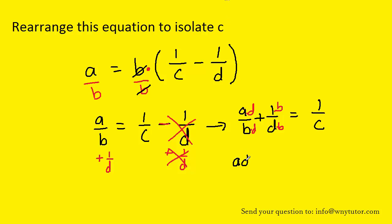We would have AD over BD plus B over BD. So we've established the common denominator. Once you've established the common denominator you can actually merge the two fractions together. You can write them as a single fraction in other words.